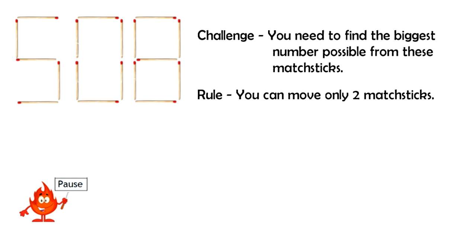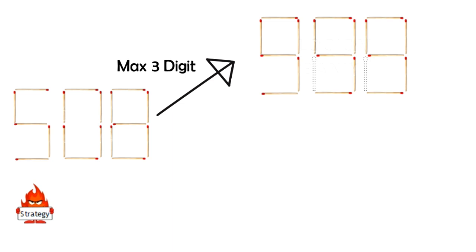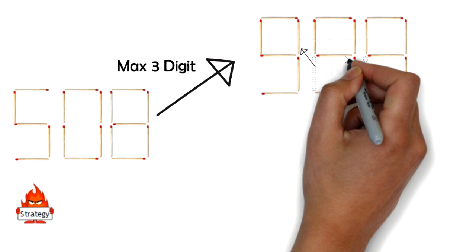Now because it's a three-digit matchstick puzzle the first thing that comes to your mind is to find the biggest three-digit number. Here you can make 999 by moving two matchsticks. But this is incorrect.